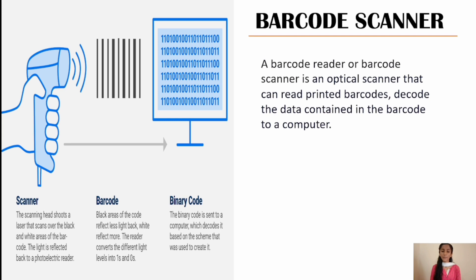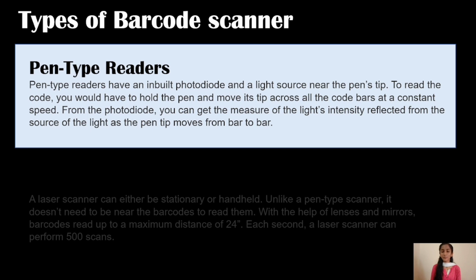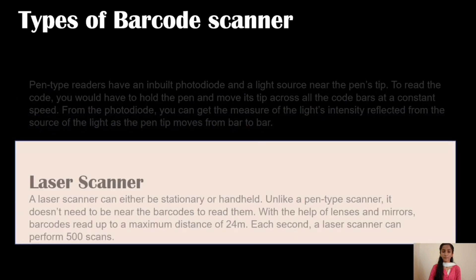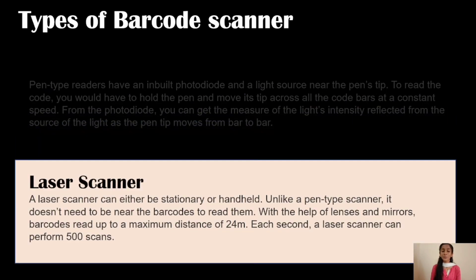The binary code is sent to a computer which decodes it based on the scheme that was used to create it. Types of barcode scanners — the first one is pen type scanners or readers. Pen type readers have an inbuilt photodiode and a light source near the pen tip. To read the code, you would have to hold the pen and move its tip across all the code parts at a constant speed. From the photodiode you can get a measure of the light intensity reflected from the light source as the pen tip moves from bar to bar.